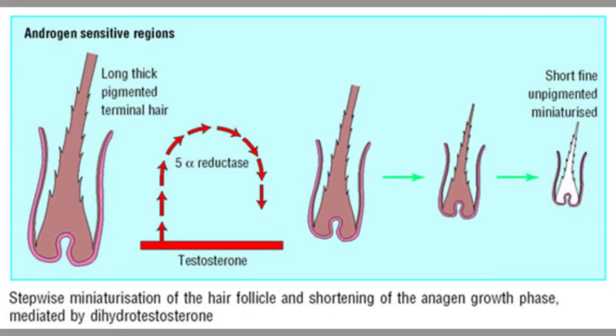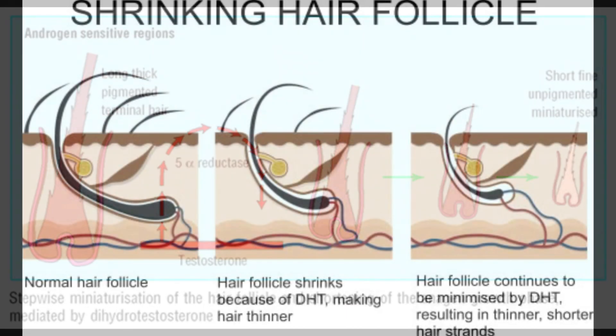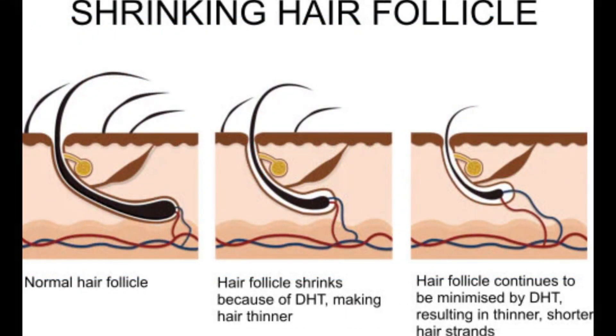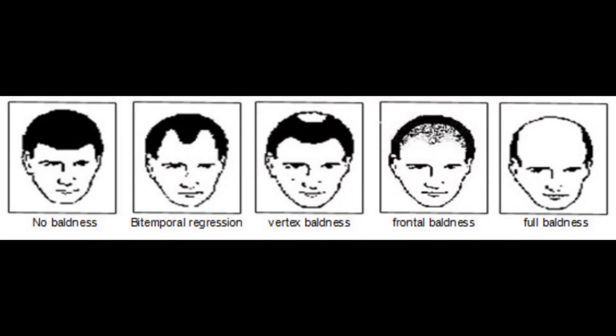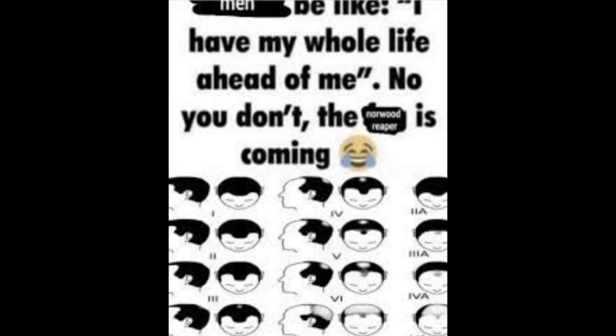The affected hair follicles shrink over time due to the shortened growth phase and prolonged resting phase. This results in the production of vellus hairs — short, soft, unpigmented hairs — instead of terminal hairs, which are long, strong, and pigmented. Eventually, after several cycles of miniaturization, the hair follicles may cease to produce any hair, leading to balding areas.